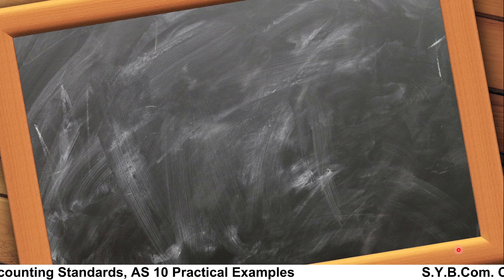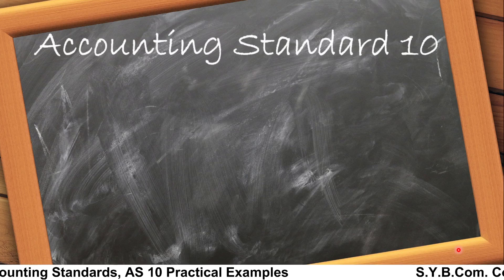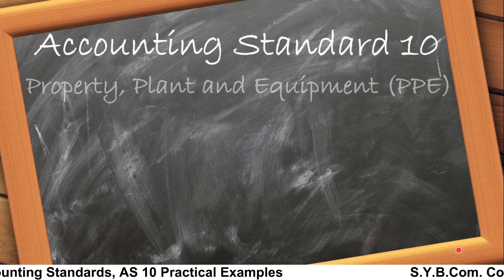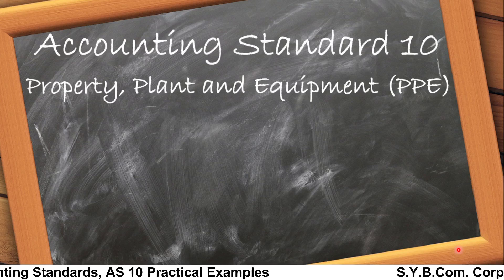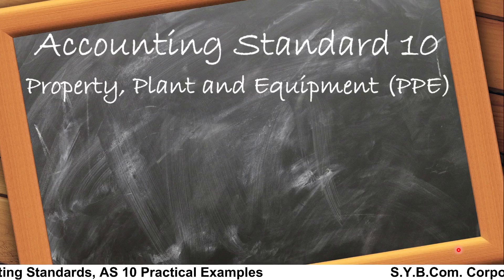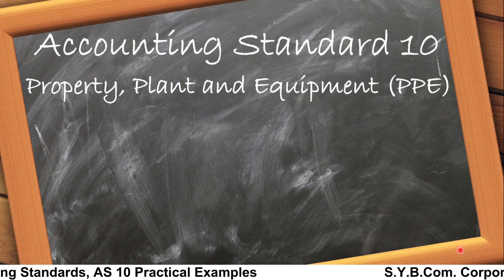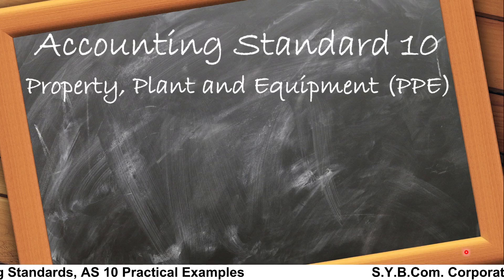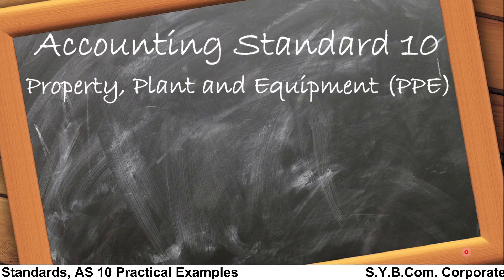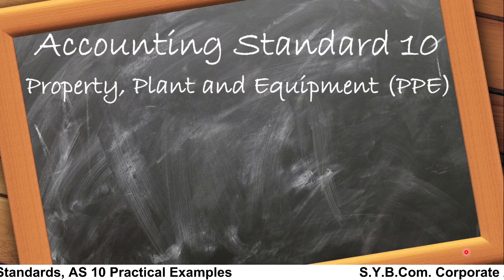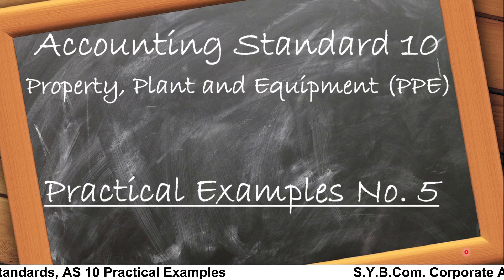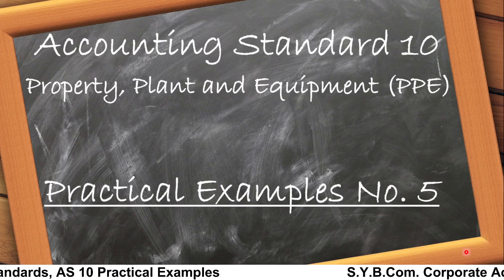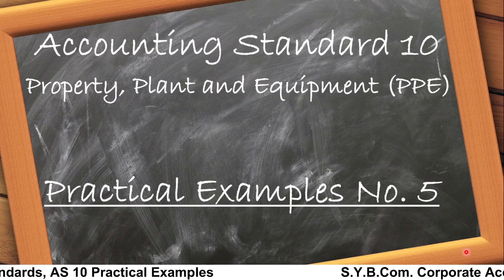Let us start our example. First of all, what is AS 10? AS 10 is Property, Plant and Equipment. As you know, in the last few videos we have already discussed about AS 10, that is PPE. So here is Example Number 5.